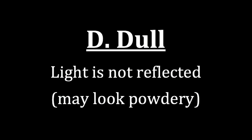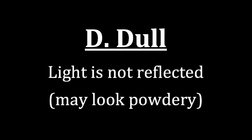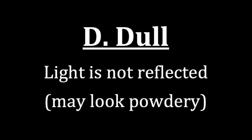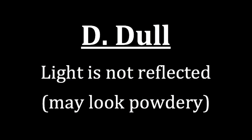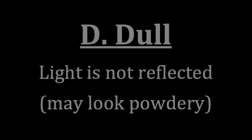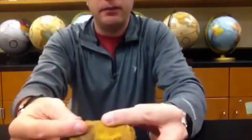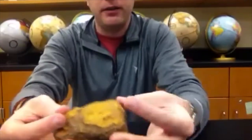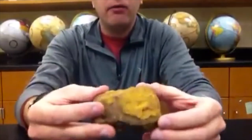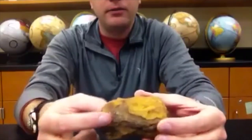The last luster, again in the non-metallic group, is dull. Here we're looking at no light being reflected. The mineral may also be powdery, so that when we touch it, we can actually feel the powdery nature of it. It might leave a little bit of residue on your finger. When we move it around, we see that light is not bouncing off it.